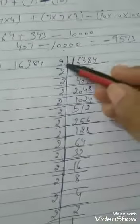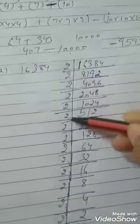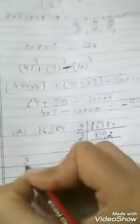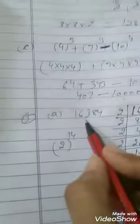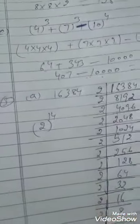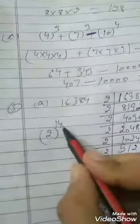Now how many times 2 came? We will count: 1, 2, 3, 4, 5, 6, 7, 8, 9, 10, 11, 12, 13, 14. It means our answer is 2 raised to power 14. We make factors of this with the smallest number. We will get 2 raised to power 14. This is our answer.